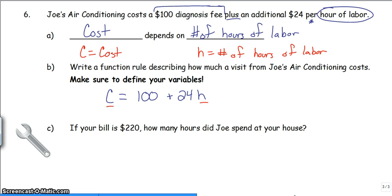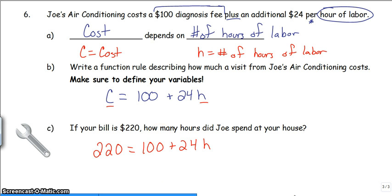So if the bill is $220, how many hours did Joe spend at my house? I know the cost. It was $220. I don't know how many hours, so I solve my equation for H. Here's our equation. That was our function rule. If you didn't have it, go ahead, press pause, solve this one now, please. So we see that Joe spent five hours at the house working on the air conditioning. Hopefully, everything is working now.